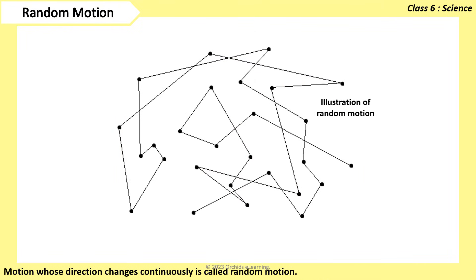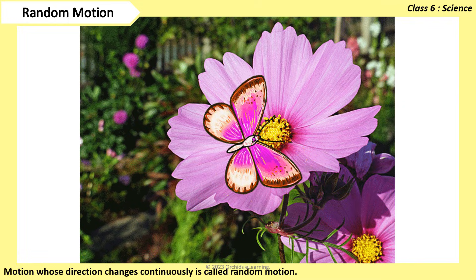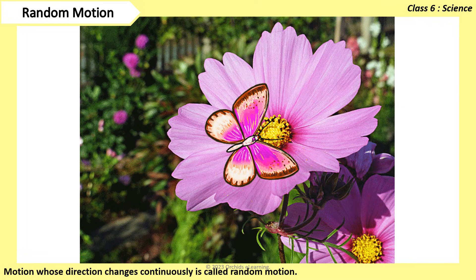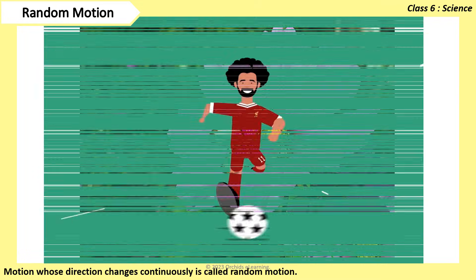Motion whose direction changes continuously is called random motion. Examples are a butterfly flitting from flower to flower, and motion of football players.